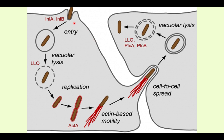When Listeria gets inside the body it enters a cell, is inside a phagosome, and then uses a virulence factor called Listeriolysin O to break down the phagosome, evading intracellular lysis. Once free in the cytosol it polymerizes host actin to become motile. This is called actin-based motility, and the actin on the bacteria is often described as rocket tails. So it's not using the flagellum inside the cell — it uses actin.